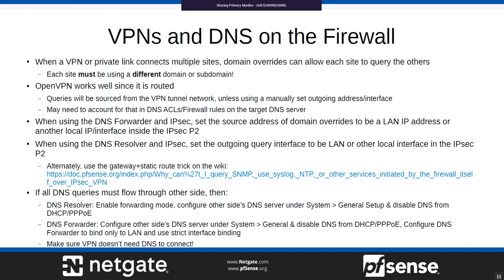If you want to send every DNS query through your VPN, in the resolver you must use forwarding mode, put the server under System > General, and disable DNS from DHCP and PPPoE. Bind to your LAN or use it for the outgoing query interface to source traffic correctly. Also, make sure your VPN doesn't need DNS to connect — if you force all DNS over the VPN and the VPN is down, you get a circular dependency where DNS can't resolve and the VPN can't come up.